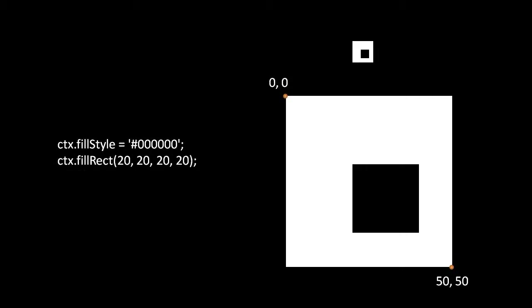Here's a simple example of drawing a black square on a 50 by 50 canvas. CTX is our context object. First we set its fillStyle property to the CSS color string '#000000', which is total black. Then we invoke the context's fillRect method with the arguments 20, 20, 20, 20 — meaning a rectangle drawn with its top left corner at position 20,20 and with a width and height of 20. And so we get a nice solid black square on our canvas.